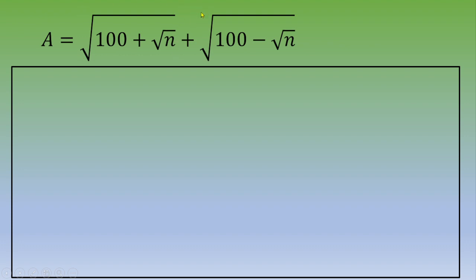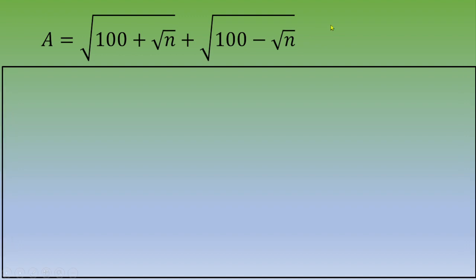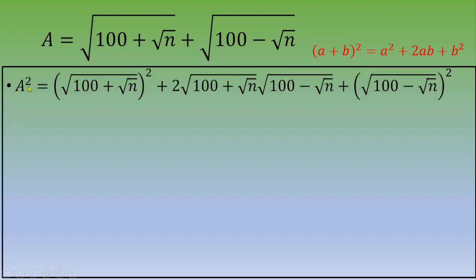We are going to square both sides of the equation. We have an addition, so we'll use the remarkable identity (a + b)² = a² + 2ab + b². Doing that, we get a² = (√(100 + √n))² + 2·√(100 + √n)·√(100 − √n) + (√(100 − √n))².